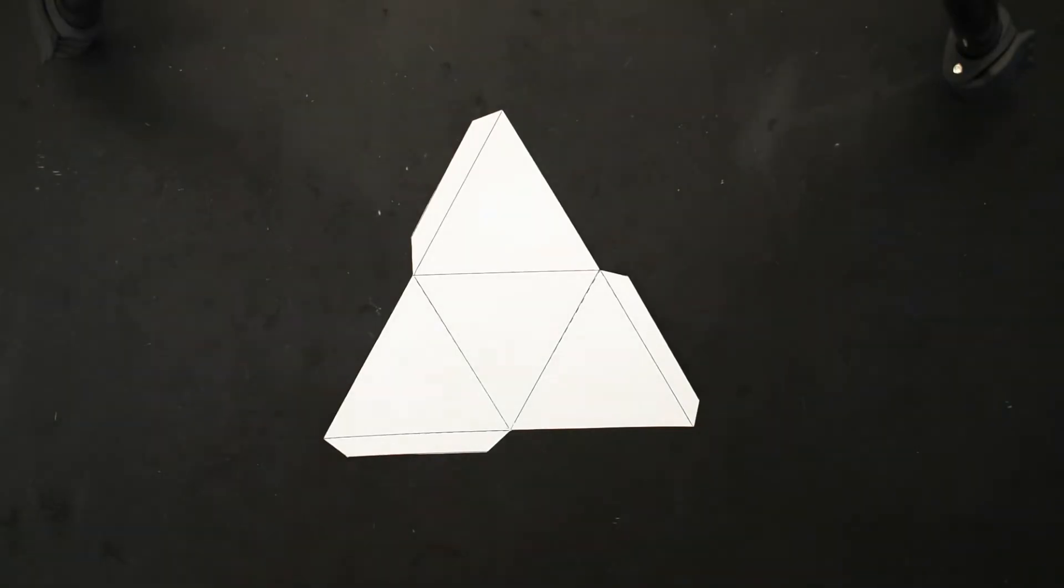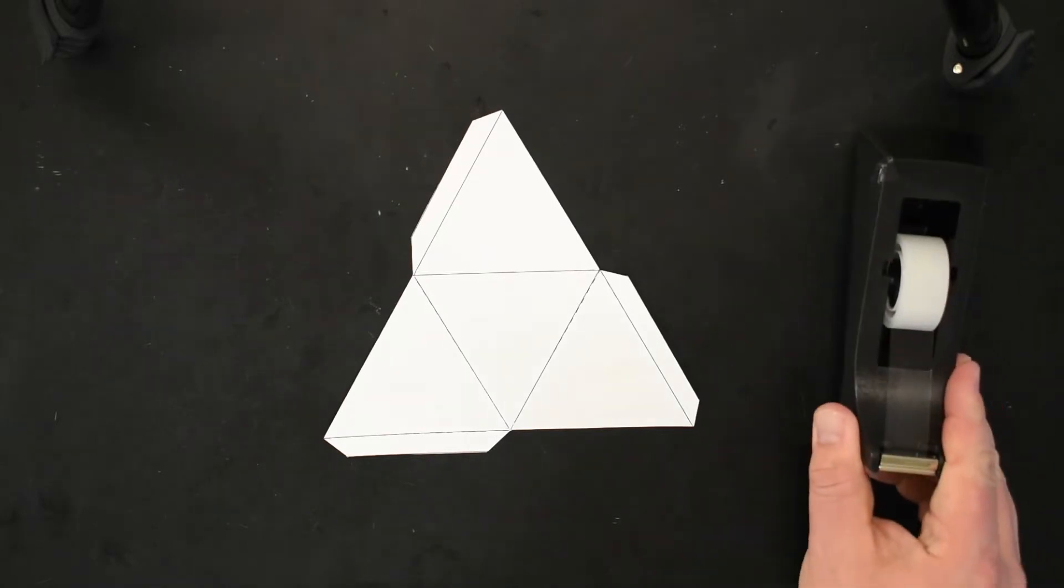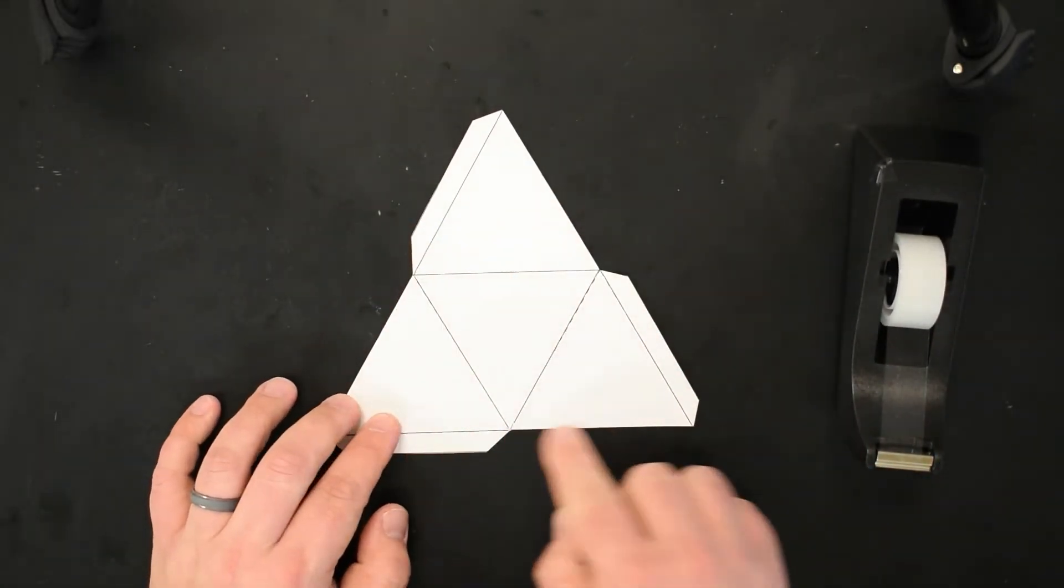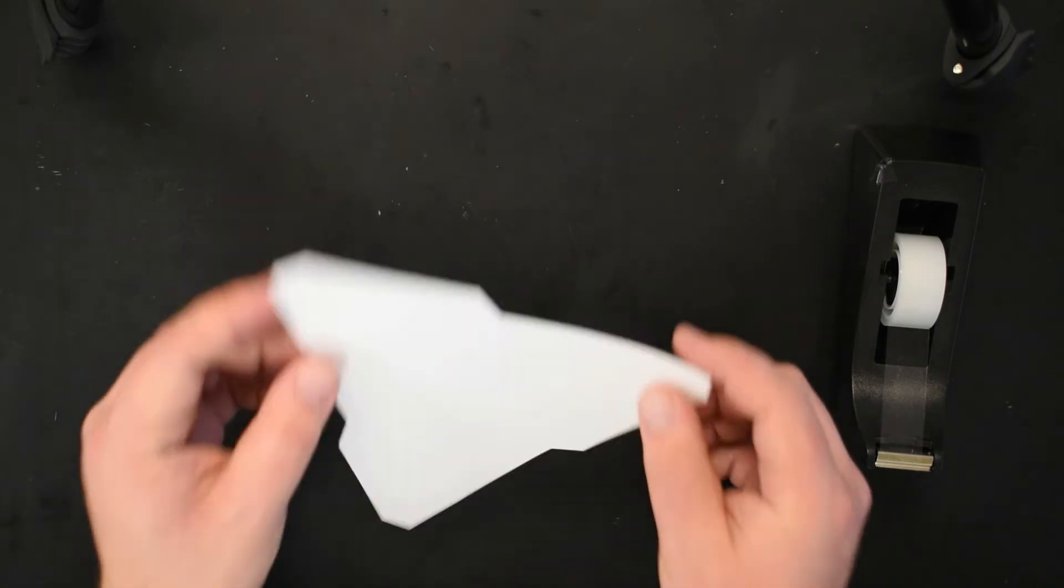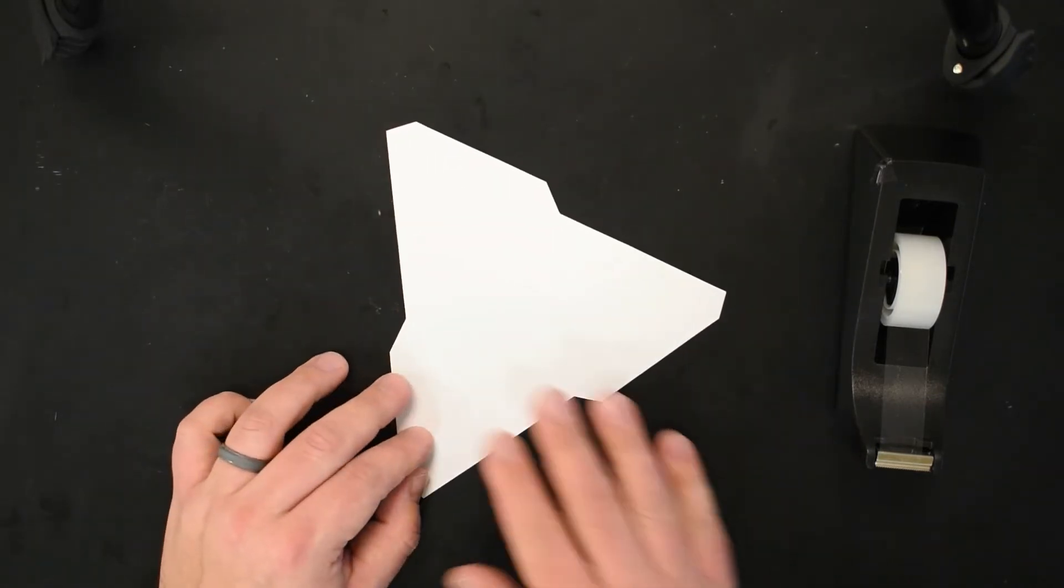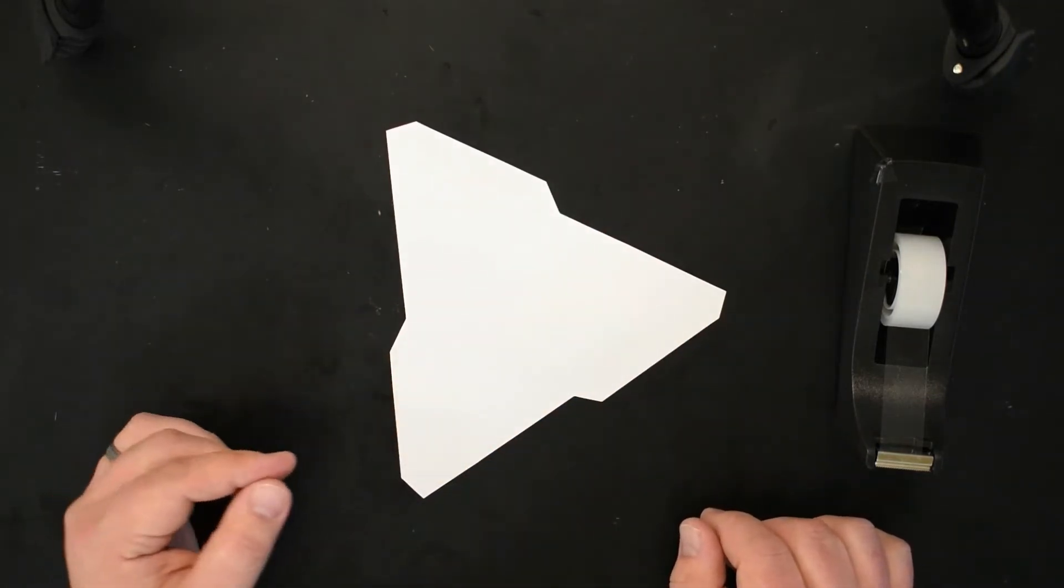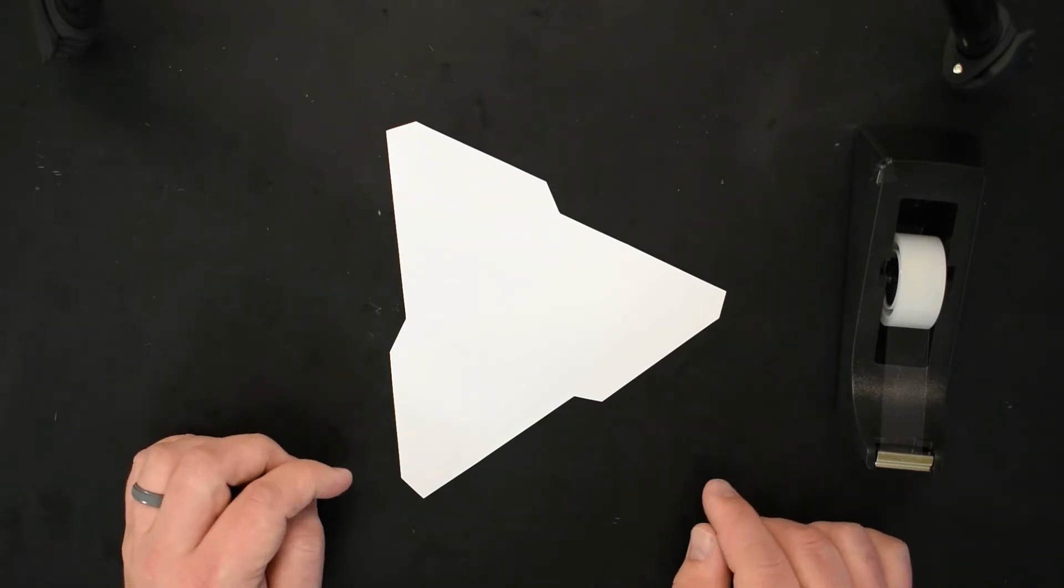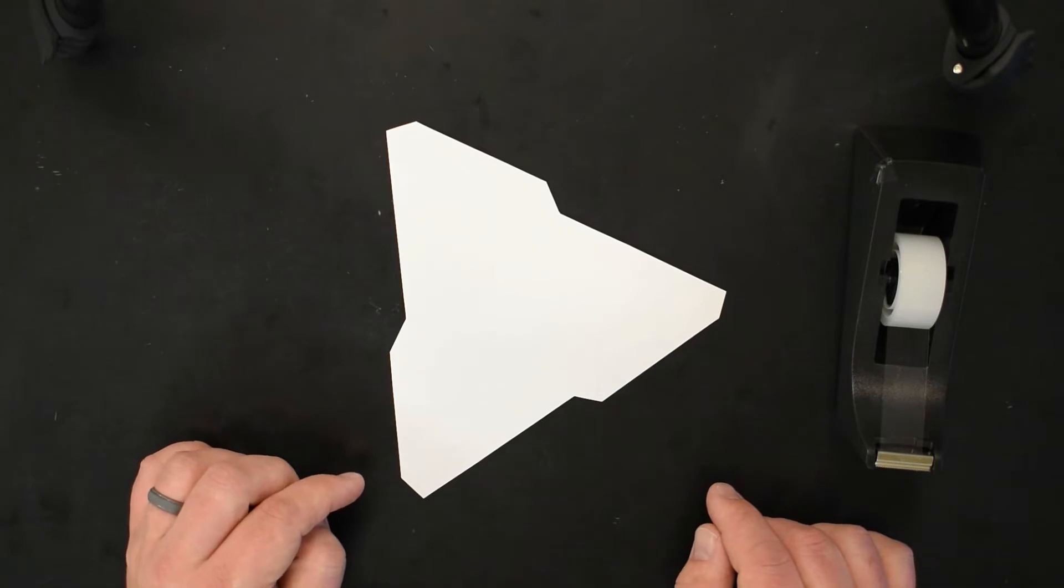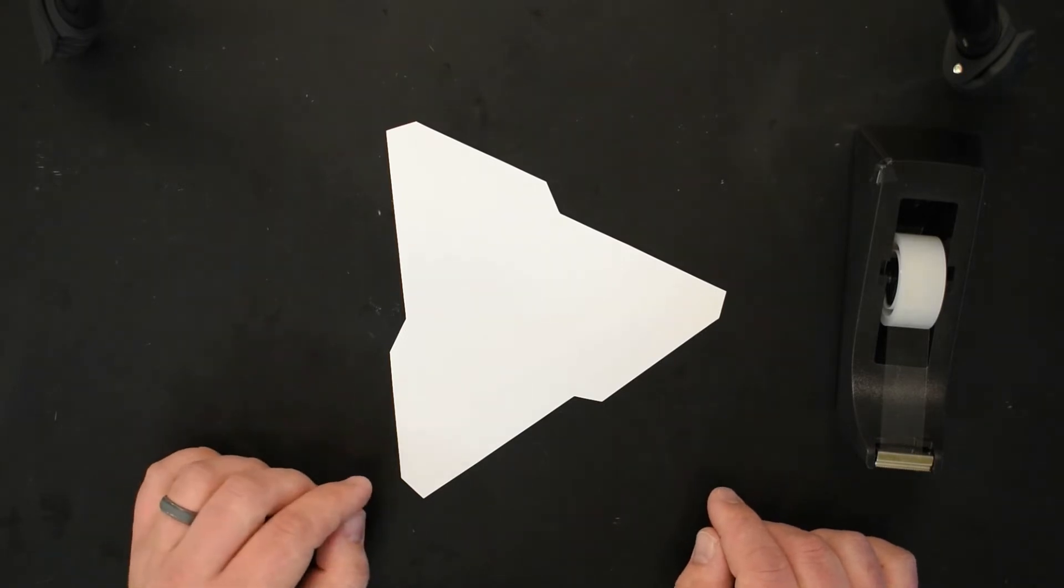Now we're ready for the last step, which is actually putting it together. Here you're going to need your tape. What you're seeing now is going to be on the inside of the figure, and here's the outside. If you want to do any decorating to your form, I suggest you do it now, especially if you're assembling it with tape. It's very hard to get any sort of marker, crayon, colored pencils, or paint onto a piece of tape.